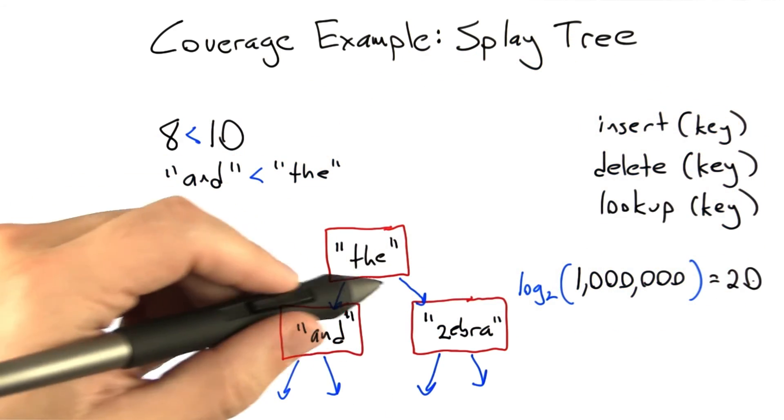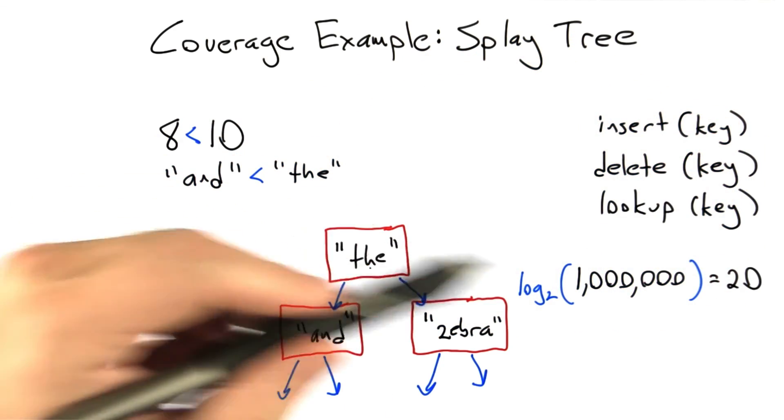And so we're going to end up doing roughly 20 operations. And so you can see since the number of operations is far lower than the number of nodes in the tree, this is generally considered to be an efficient kind of data structure.